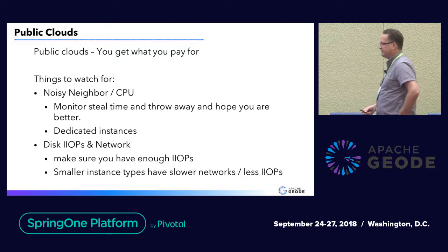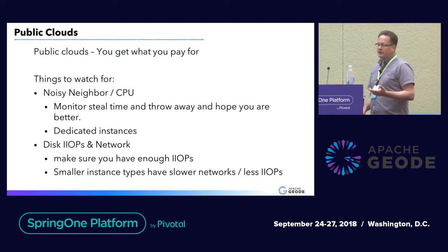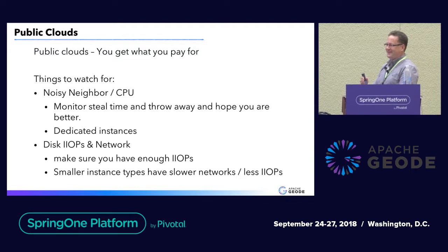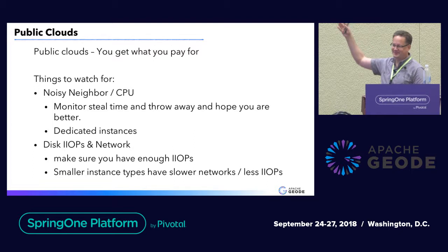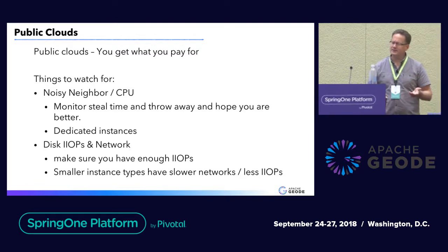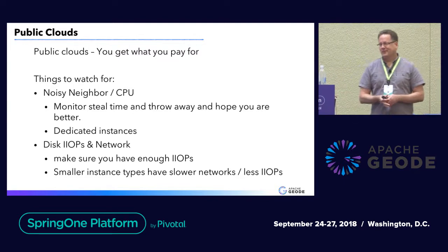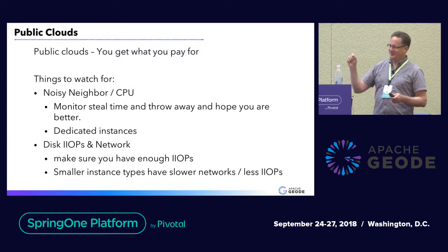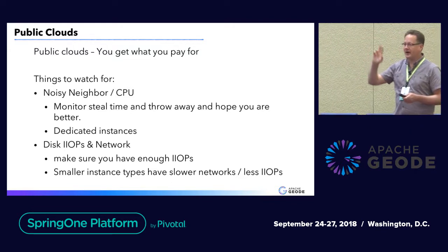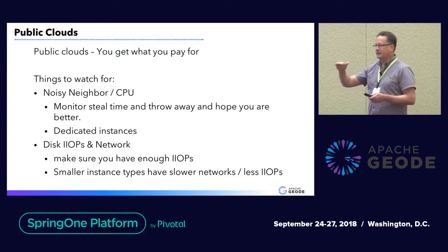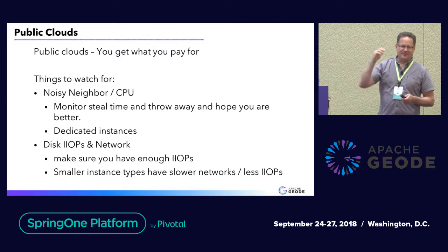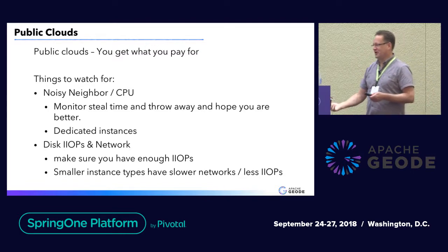Public clouds — like I said, you get what you pay for. Some things to watch out for: definitely monitor your noisy neighbor. Are you on the machine where Netflix is encoding the next major Marvel blockbuster? You might be on that machine and it's not going to be nice. So make sure you're monitoring, or go with reserved instances. The other one is disk IOPS and network throughput. If you go cheap you get cheap; if you go expensive you get really nice stuff. On Amazon, it's like the 8XL or higher to get decent networking. Once you're below that you're on a rate-limited networking speed, which turns that one-day hike into a two-day hike.